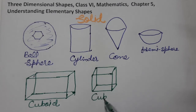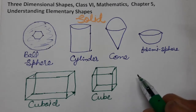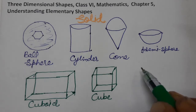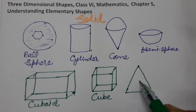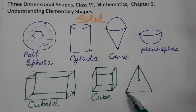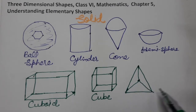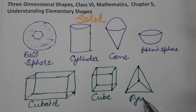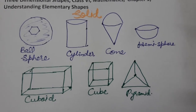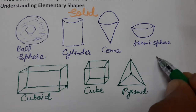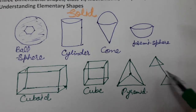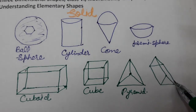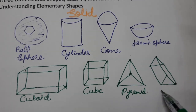This is a cuboid. Then there is a cube, which has all sides equal — all edges equal. We have also seen pyramids — like the great pyramids of Egypt. This is a pyramid. Then we have also seen a prism — one triangular prism.